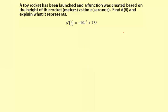A toy rocket has been launched, and a function was created based on the height of the rocket in meters versus time in seconds. Find d of 6 and explain what it represents.